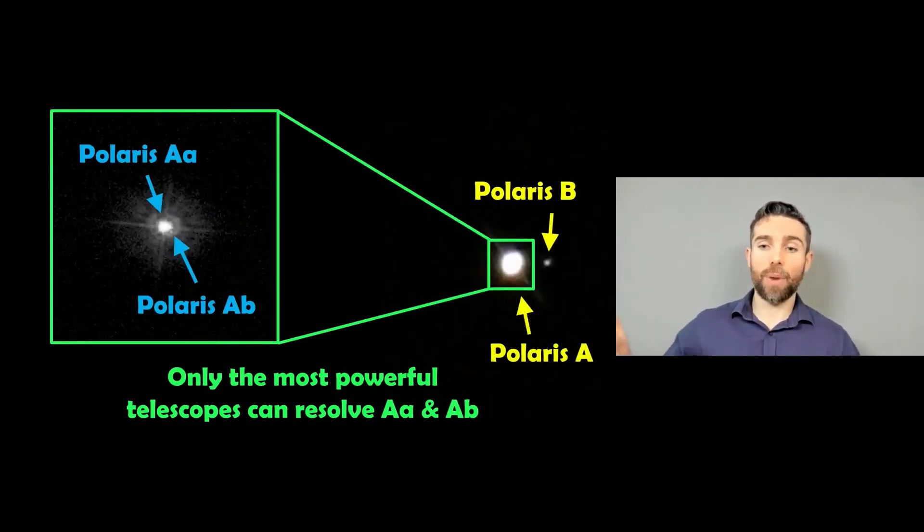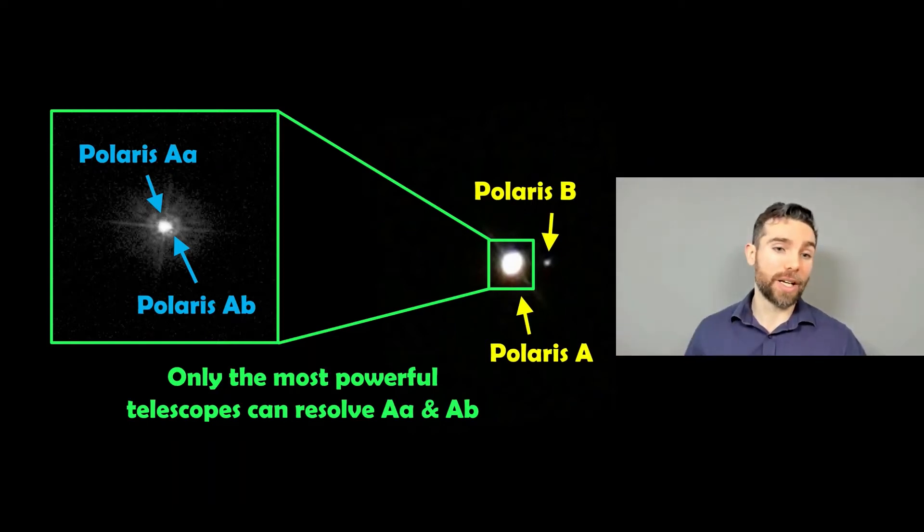Now to see the components of Polaris A, so the Aa and Ab part of Polaris A, you need a much more powerful telescope. So you won't be able to resolve this yourself. But to get that third one, that really small Ab one next to the primary star, then you need something like Hubble, which is this image here. If you zoom in on that one, you can just about resolve the small one. It's because they're very close to each other, and you need a really good angular resolution to be able to separate those two. So you need a powerful telescope to see all three, but you can see two of them with a fairly small telescope.